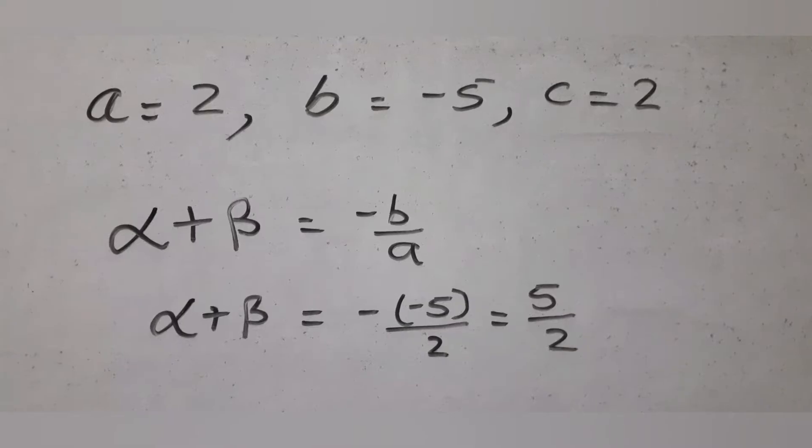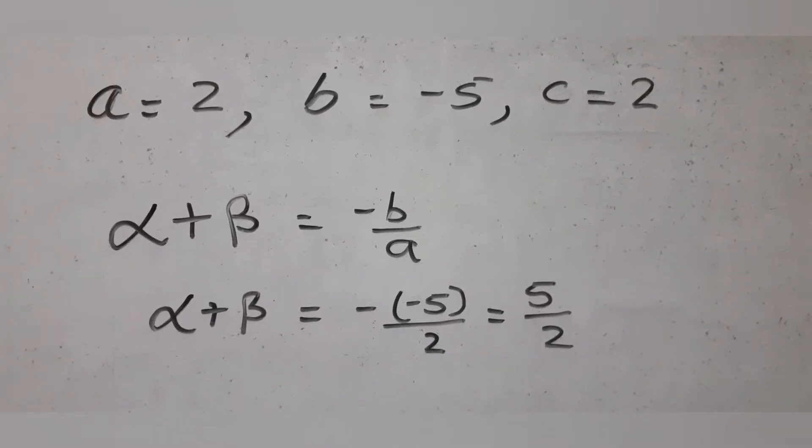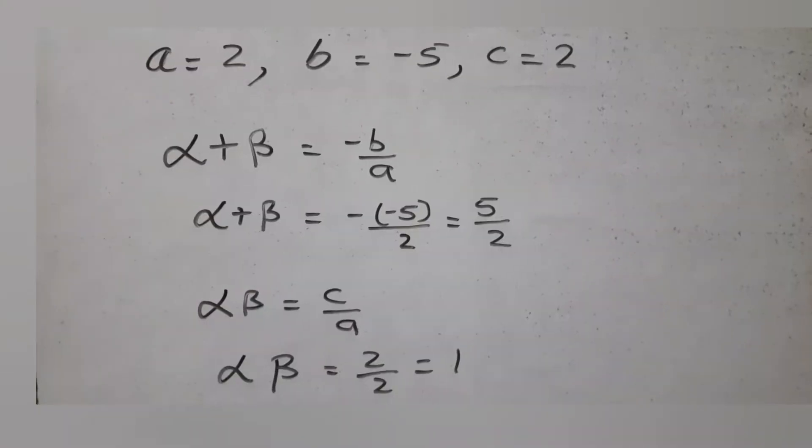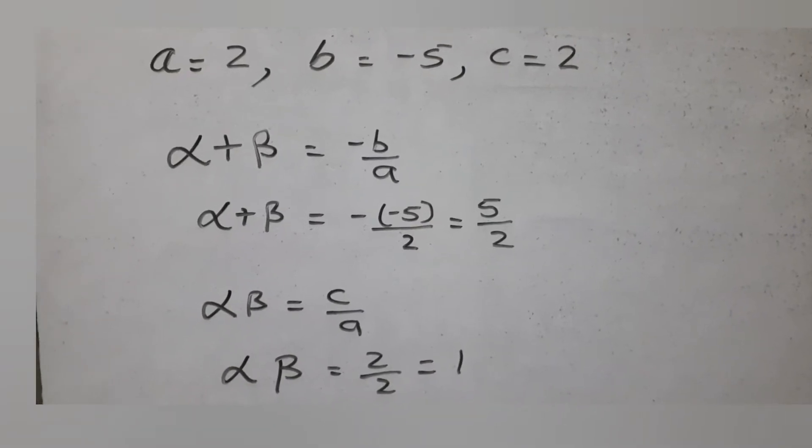Sum of the zeros alpha plus beta equal to minus b by a equal to 5 by 2. Product of zeros alpha into beta equal to c by a equal to 1.